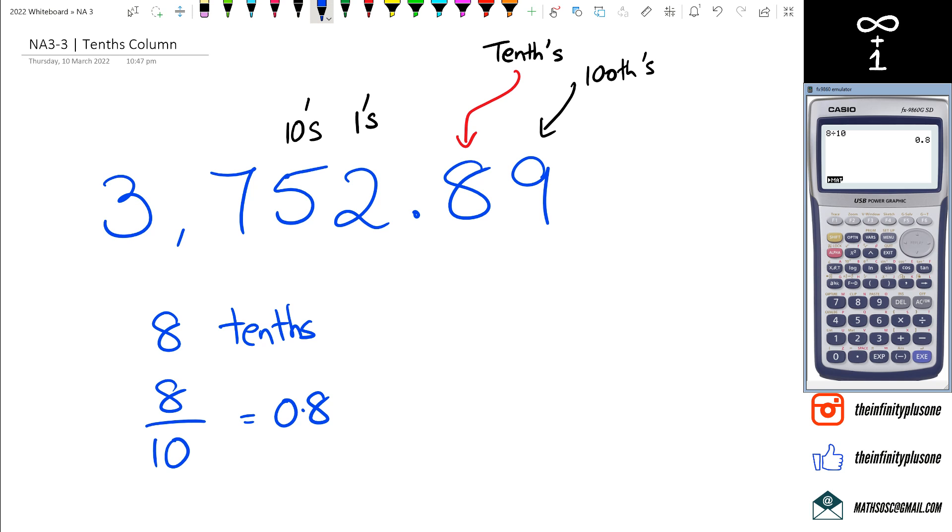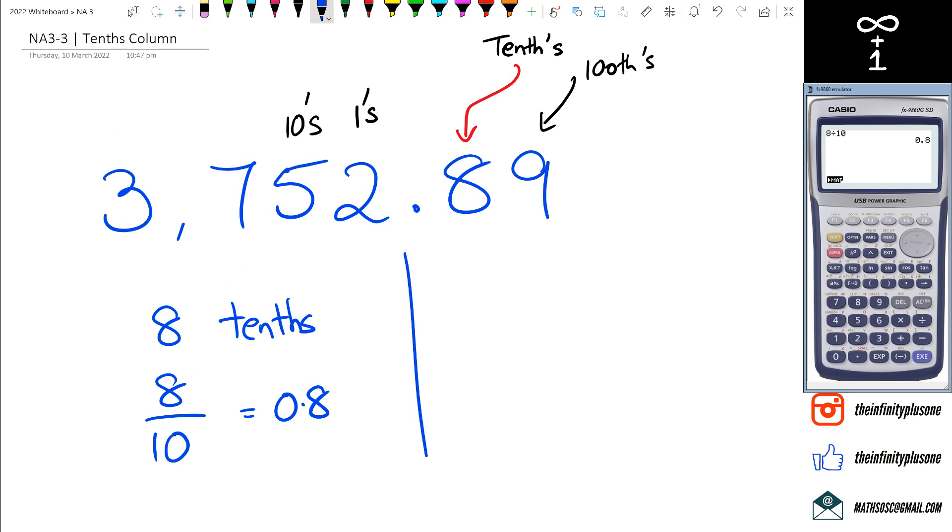Let's have a look at a couple of examples. What happens if we've got the number 3.07? In this case, 0 is in the tenths column.